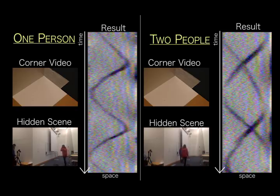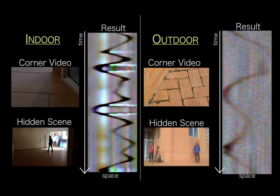Here, we show reconstructions using the same corner, but when one versus two people are hidden. We have demonstrated that our method works in both indoor and outdoor environments, under a variety of lighting conditions.